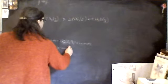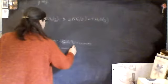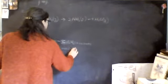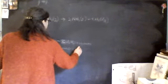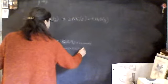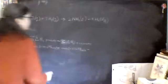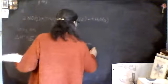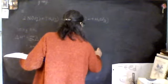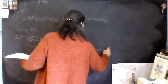H2O gas is negative 242 kilojoules per mole minus the enthalpy, the summation of the enthalpy of formation of the reactants. NO2 is 33.2 kilojoules per mole.